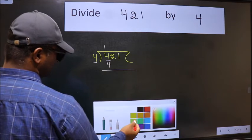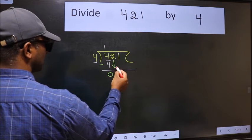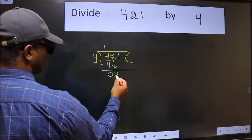Now we should subtract. We get 0. After this bring down the beside number. So 2 down.